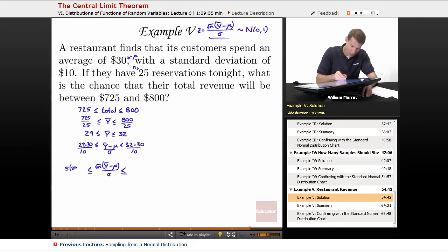5 times 29 minus 30 over 10, and 5 times 32 minus 30 over 10. And that actually simplifies fairly nicely, 5 over 10 is 1 half. 1 half times negative 1 is negative 1 half, so negative, I'll write that as negative 0.5. And then the point of this was we were building up a standard normal variable, so that's my z right there. This is between negative 0.5 and now 5 over 10 is still 1 half, 32 minus 30 is 2, so 2 times 1 half is just 1.0.